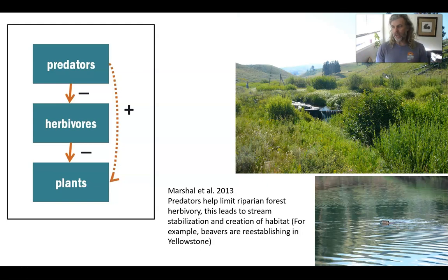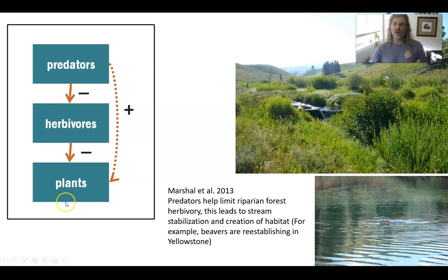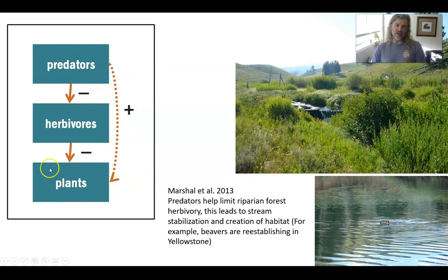This is known as a trophic cascade — where the actions of one level of the food chain have an indirect but positive effect on a part of the food chain below it. Essentially, plants are being protected from herbivory by the action of predators.